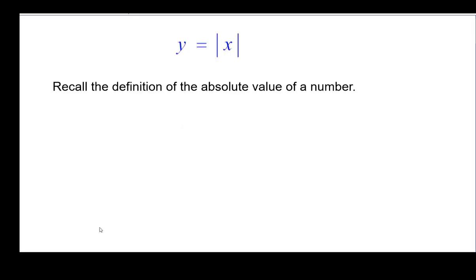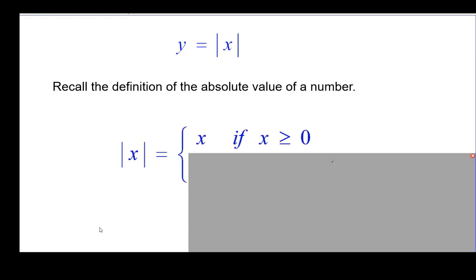We'll start by recalling the definition of the absolute value of a number. The absolute value of a number is equal to the number itself if the number is positive or zero, and it's equal to its opposite if x is negative. So the answer to this is always a positive number or zero.